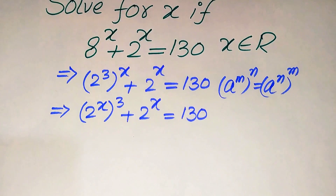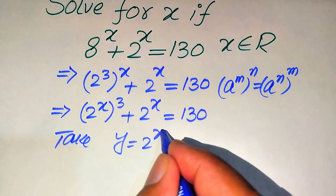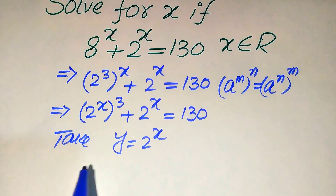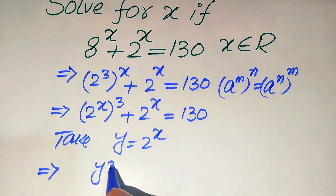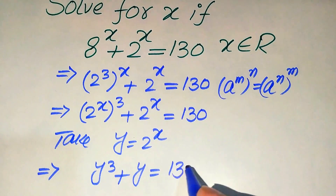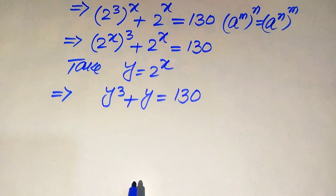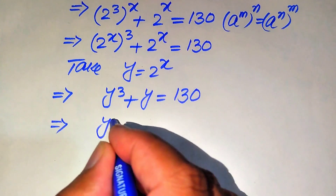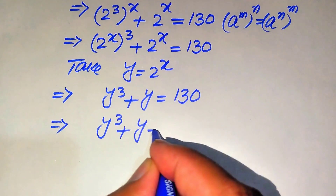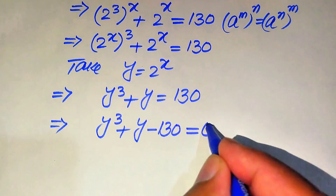Now we convert this exponential equation into a simple cubic form. For this we take y equals 2 to the power of x. Substituting, the equation becomes y cubed plus y equals 130. Moving 130 to the left-hand side gives y cubed plus y minus 130 equals 0.